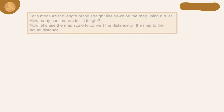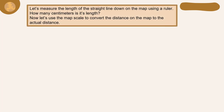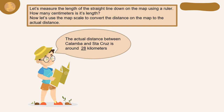Let's measure the length of the straight line drawn on the map using a ruler. Now let's use the map scale to convert the distance on the map to the actual distance. The actual distance between Calamba and Santa Cruz is around 28 kilometers.